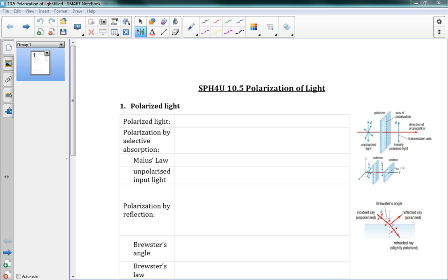Now this lesson is mostly conceptual, just so that you understand the idea of polarized light and what it means. So polarized light is light that vibrates in a single plane.